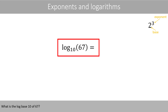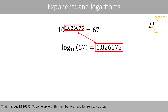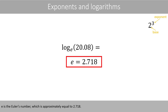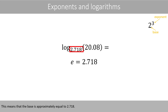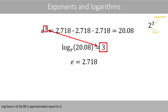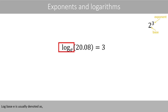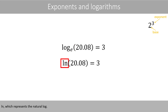What is the log base 10 of 67? That is about 1.826075. To come up with this number, we need to use a calculator. What is the log base e of 20.08? e is Euler's number, which is approximately equal to 2.718. This means that the base is approximately equal to 2.718. Log base e of 20.08 is approximately equal to 3, because if we multiply Euler's number by itself three times, we get a value of approximately 20.08. To compute logs with the base of e, we also need to use a calculator. Log base e is usually denoted as ln, which represents the natural log.